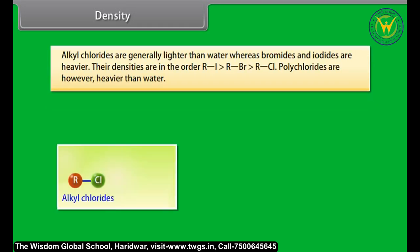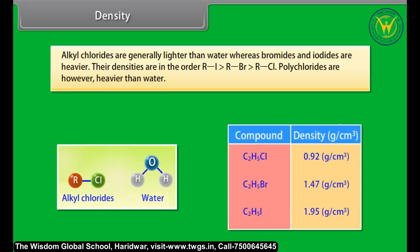Alkyl chlorides are generally lighter than water, whereas bromides and iodides are heavier. The densities follow the order: RI > RBr > RCl. Polychlorides are, however, heavier than water.